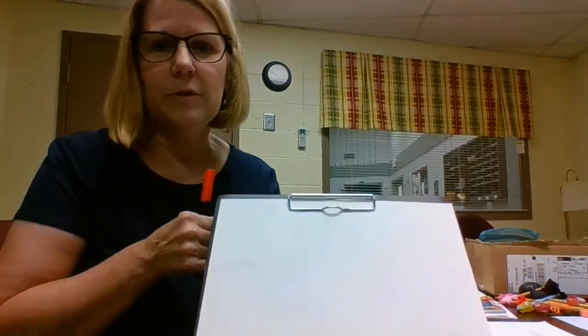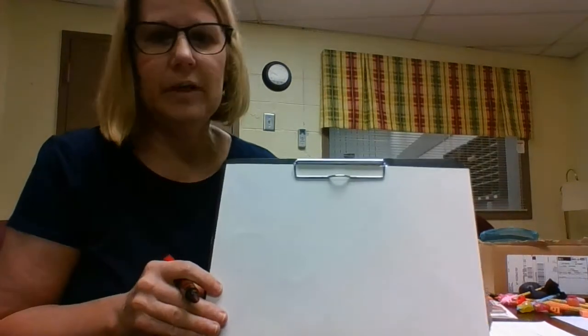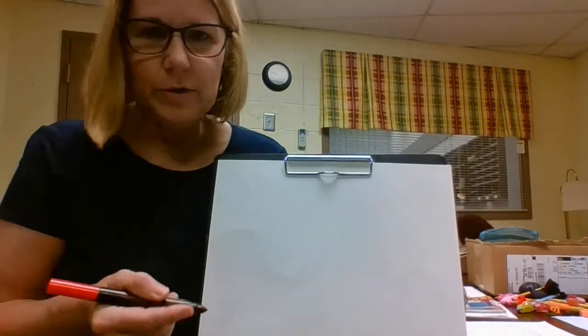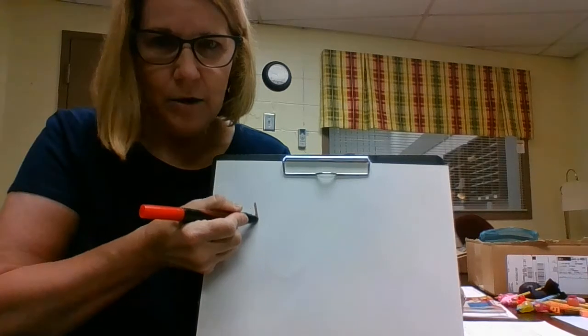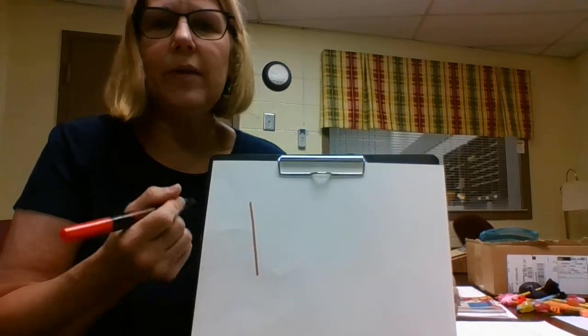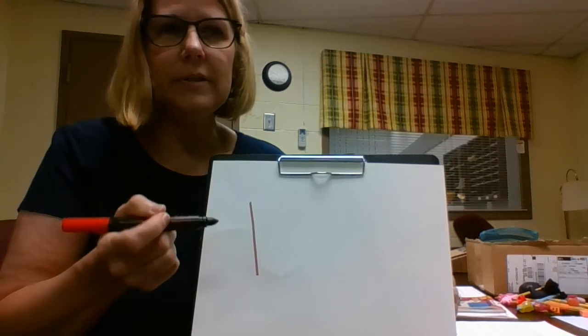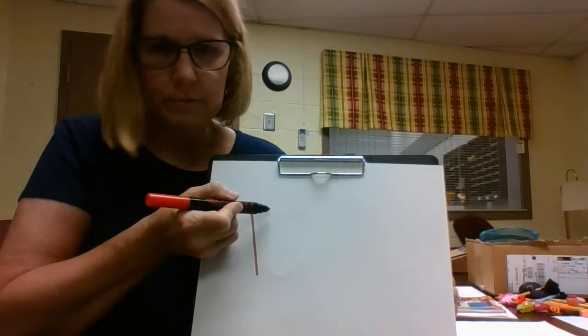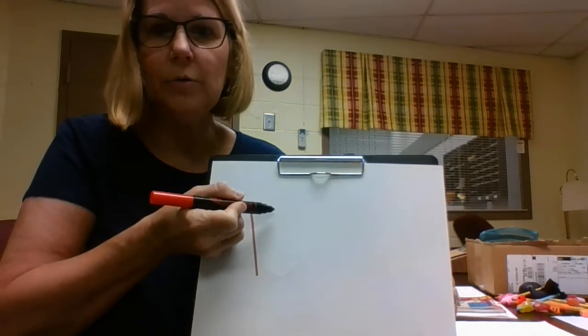So for instance, if you want to start with, say, a vertical line, you always want to go down, show them the movement down and say 'down.' That way when they come to a letter like B, you're going to tell them 'down' and they will know which direction is down.